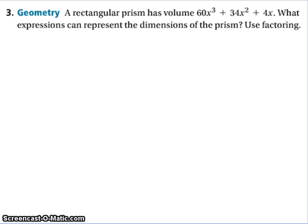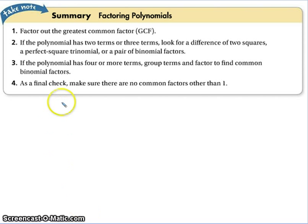And then this last slide is just kind of a summary of everything that we just did. The first thing you look for is a greatest common factor. If it's not there, skip the step. If the polynomial has two or three terms, look for a difference of two squares, a perfect square trinomial, or a pair of binomial factors. That's what we did in section 5 and 6. Seven is the perfect squares or the difference of two squares. Step number three, if the polynomial has four or more terms, group terms and factor to find common binomial factors. And number four, as a final check, this is important, make sure there are no common factors other than one.